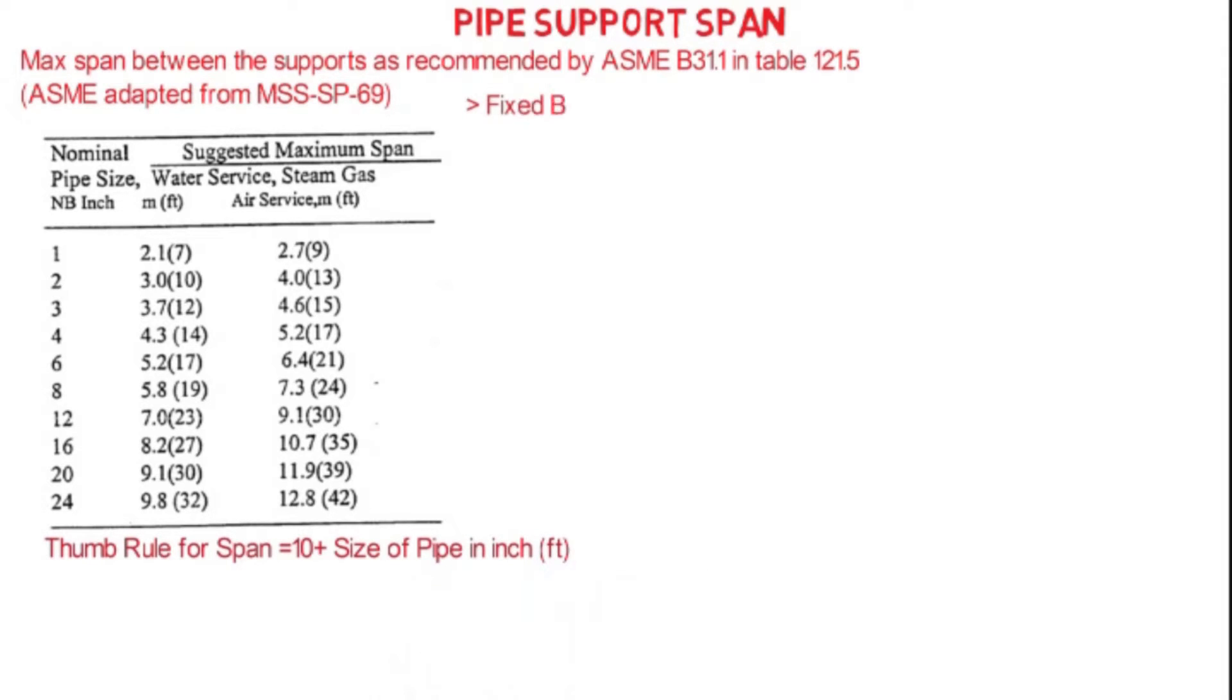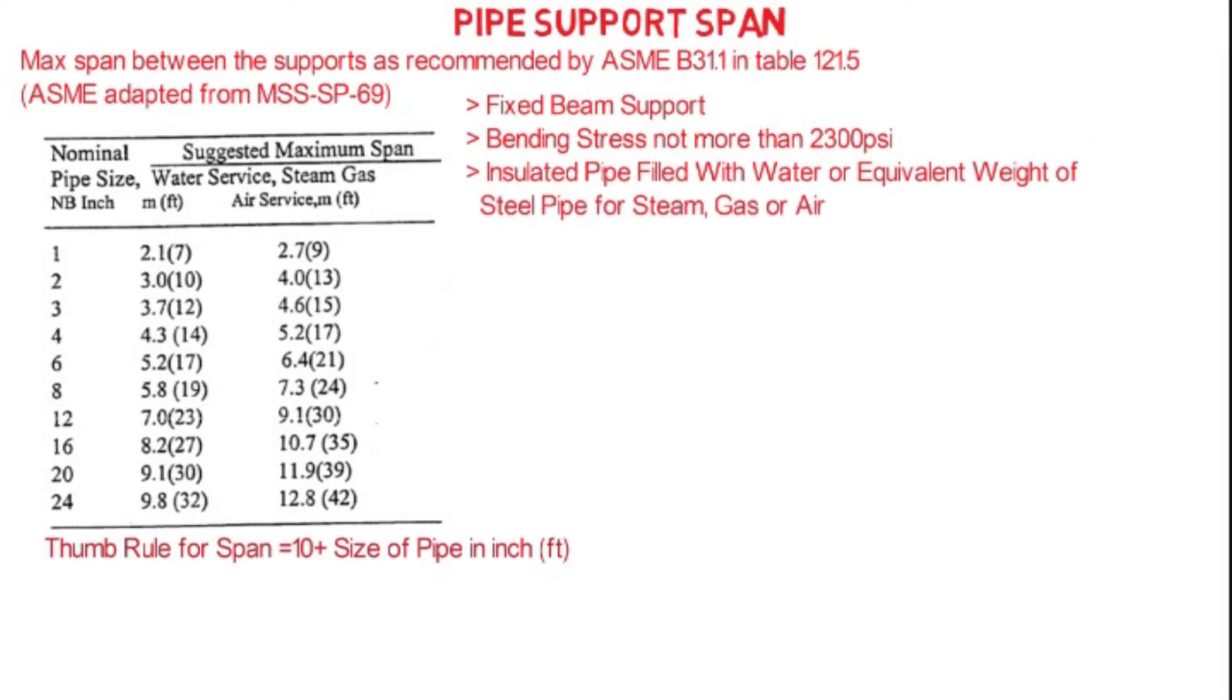This spacing is based on fixed beam support with bending stress not to exceed 2300 pounds per square inch, and insulated pipe filled with water or equivalent weight of steel pipe for steel gas or air for horizontal pipe at 400 degrees Celsius. This chart is not applicable for concentrated loads like valves, flanges, special items, strainers, branch resting on the header, etc., and where change in direction takes place.